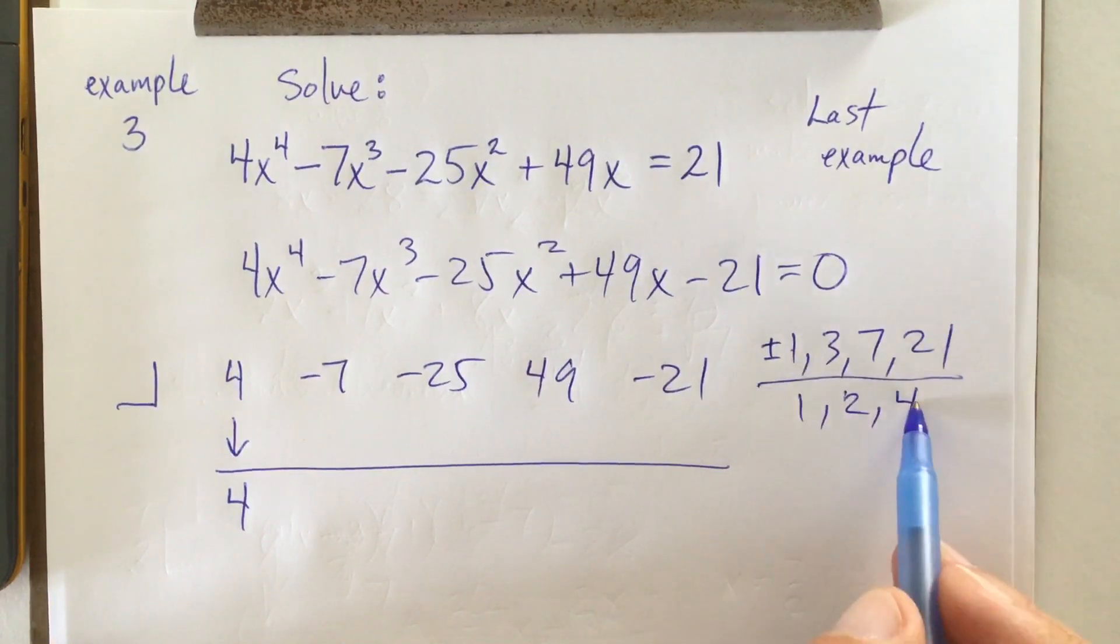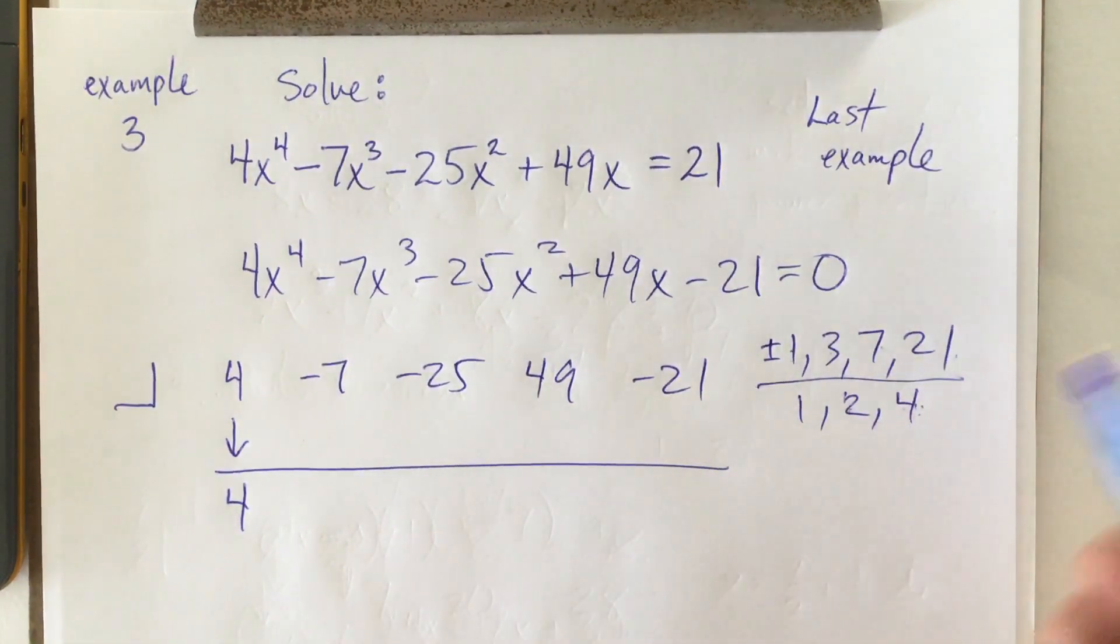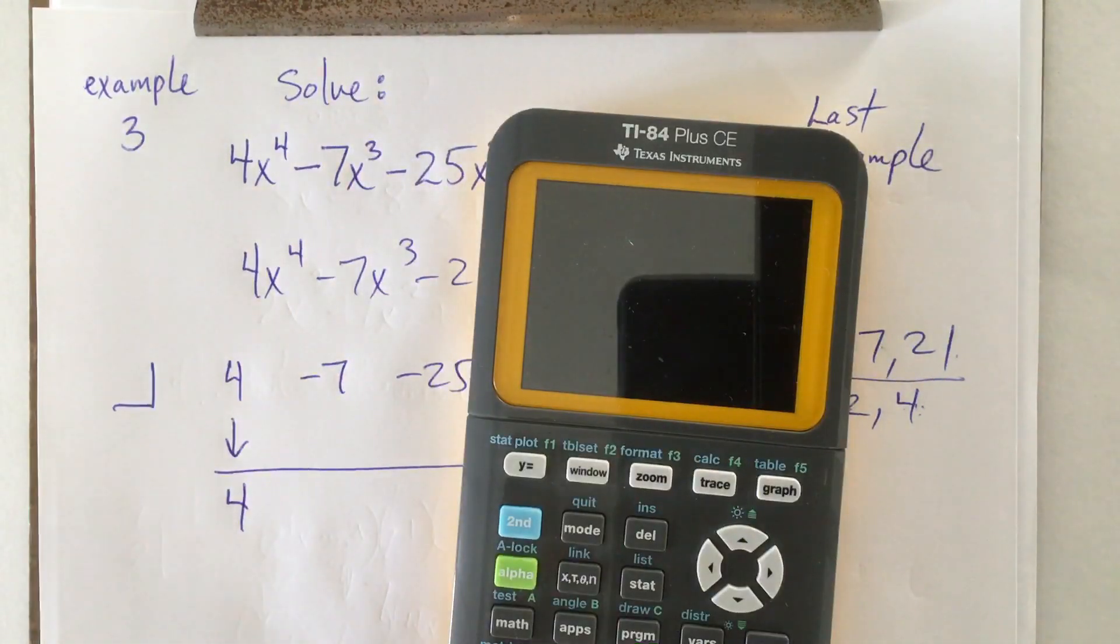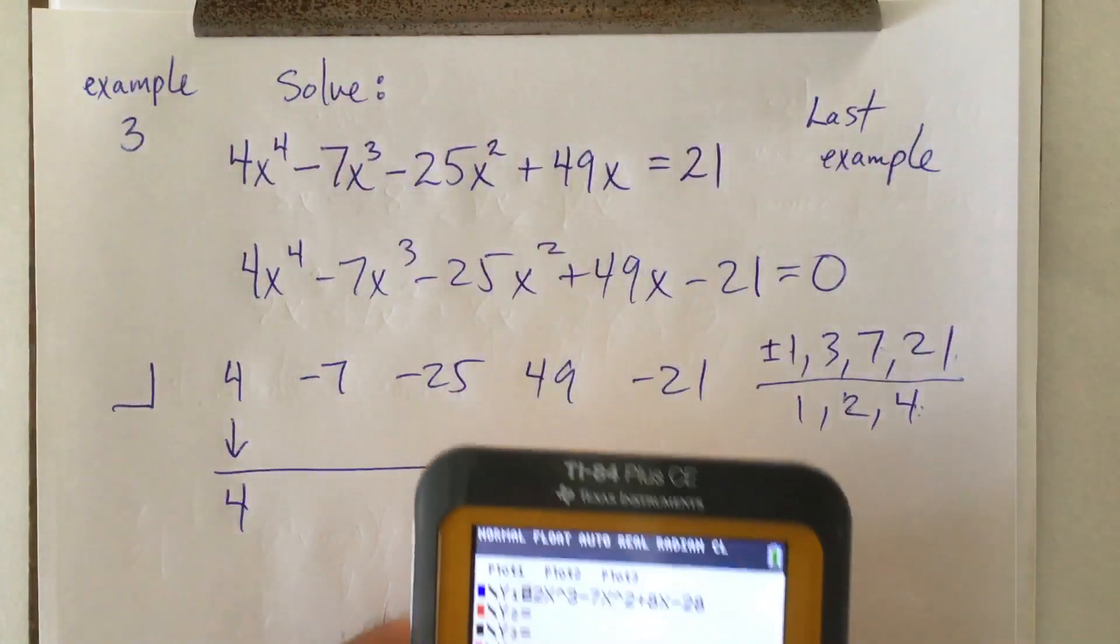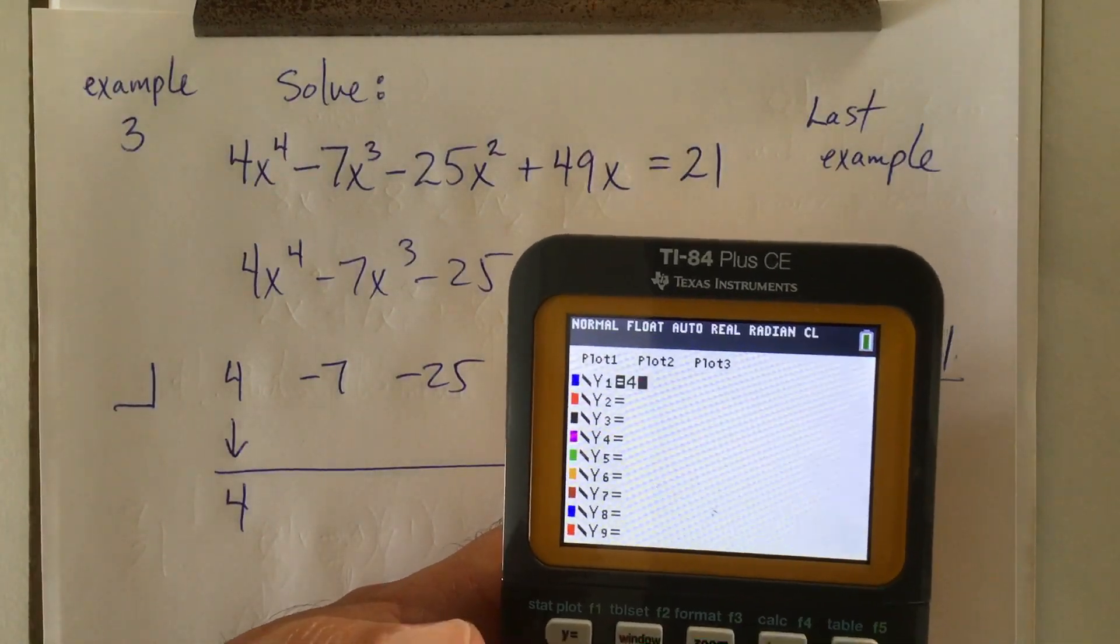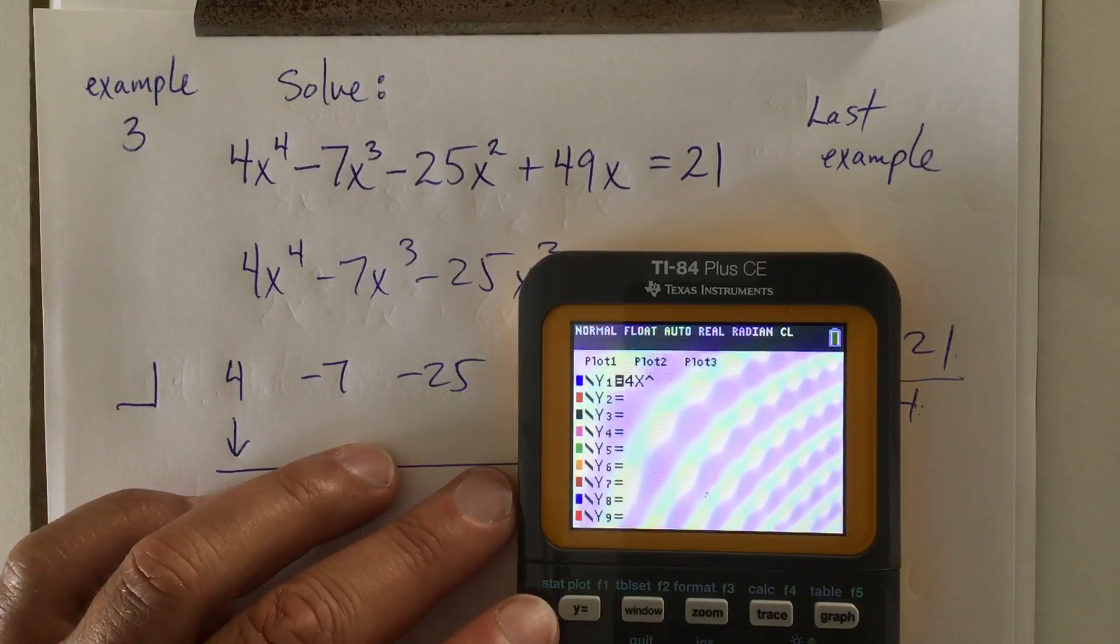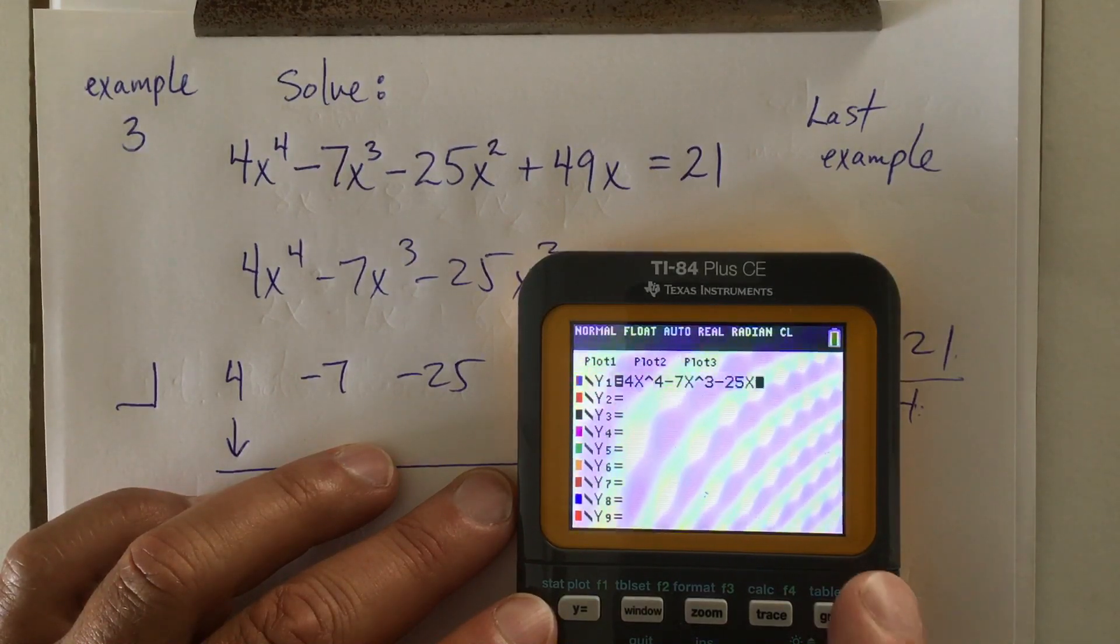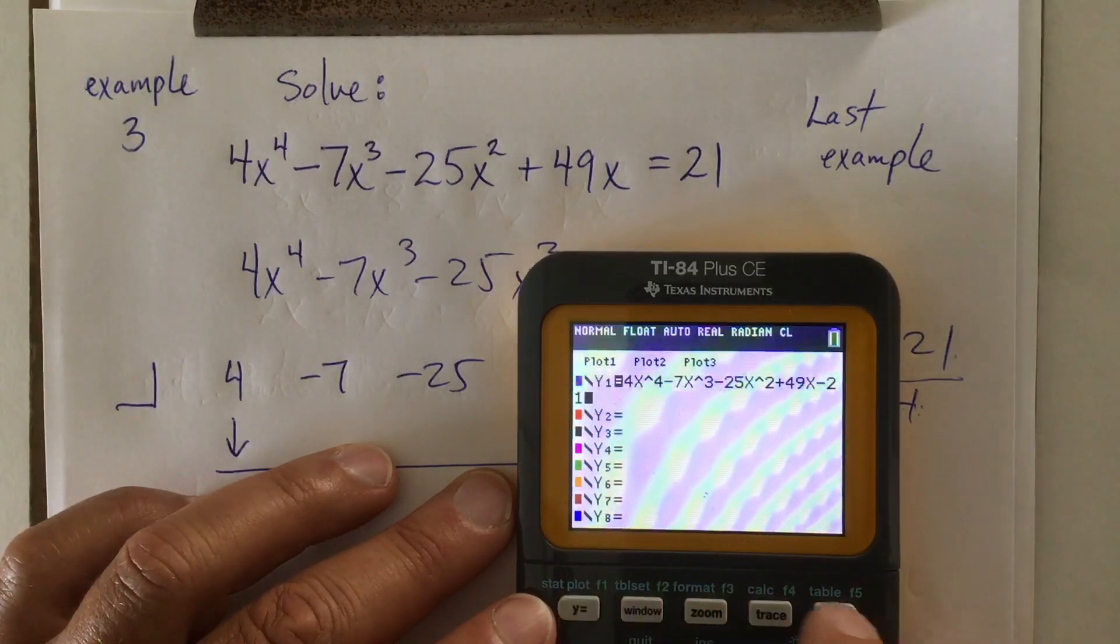Ew. So, I might have 1 half or 1 fourth, or 3 halves or 3 fourths. 7 halves, 7 fourths. I have 21 fourths, 21 halves. There's all kinds of crappy possibilities for this thing. So, I do not want to just guess. I'm going to go back to my calculator. Now, I'm going to go y equals, and I'm going to clear this out. This is and I'm going to say 4x. Okay, I'm just going to put it down and do it. 4x to the fourth minus 7x to the third minus 25x to the second plus 49x minus 21. And let's graph it. Let's see what it looks like.